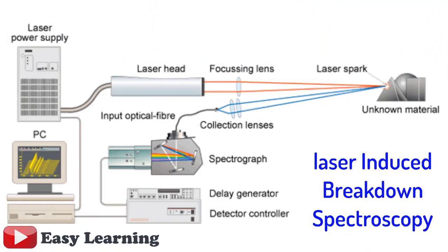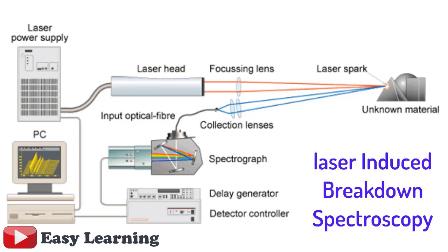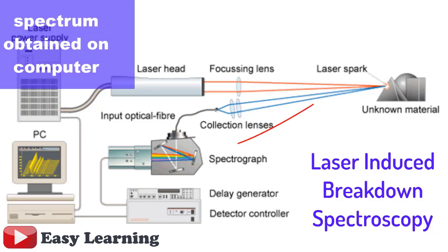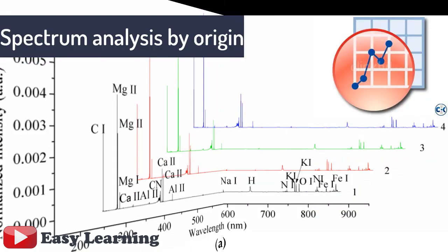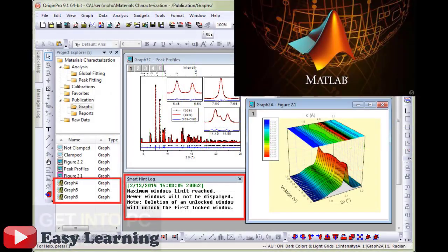LIBS stands for Laser Induced Breakdown Spectroscopy. As its name indicates, it is a technique in which laser is used for the breakdown of sample atoms to form plasma. The produced plasma emits radiations which are collected by a spectrometer, and the spectrum is obtained on the computer. Different software like Origin and MATLAB are used for the study of the spectrum for qualitative and quantitative analysis.